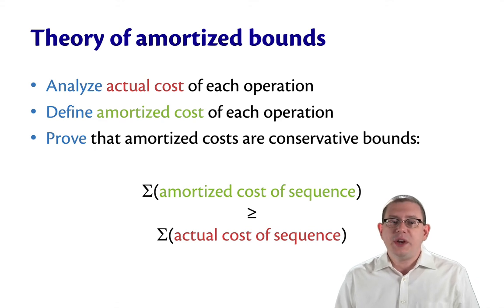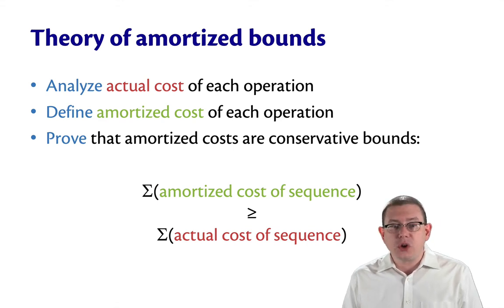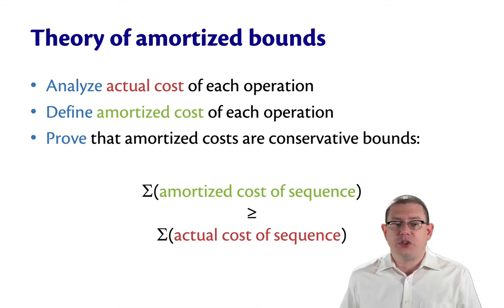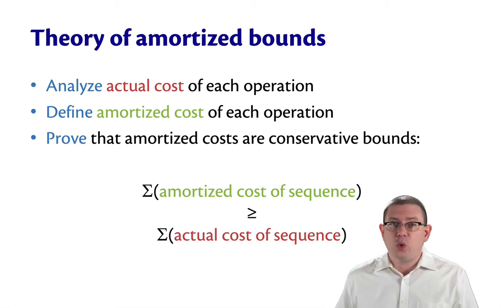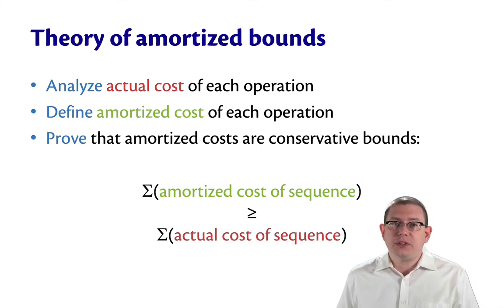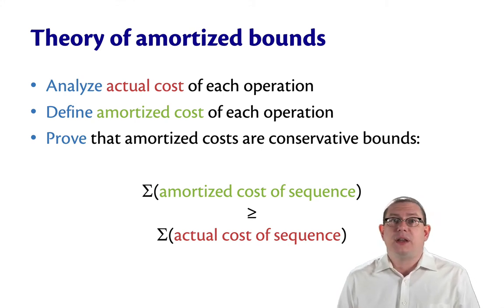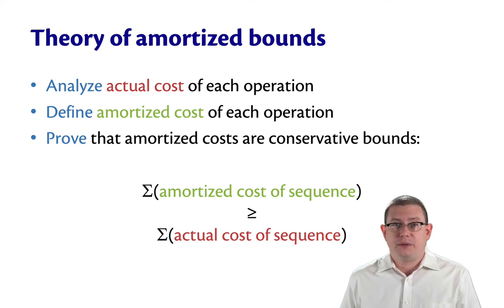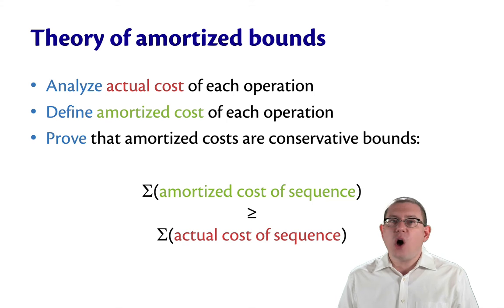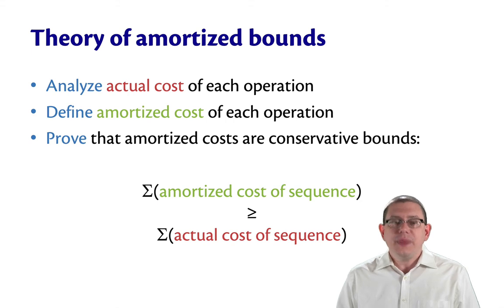In particular, we need to prove that the amortized cost is a conservative bound on the actual cost. So suppose you have a sequence of operations. What you really want to show is that if you take the sum of the actual cost of every operation in that sequence, that's actually going to be bounded from above by the amortized cost of the entire sequence of operations. So the amortized cost is always worse than the actual cost for the whole sequence — that's what it means for the cost to be a conservative bound.